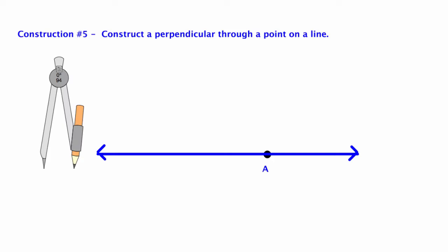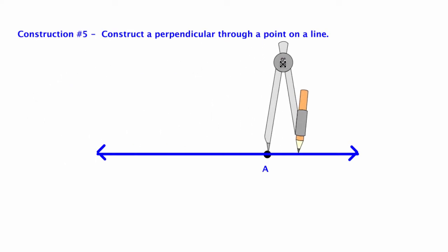For this construction, I'm going to construct a perpendicular through a point on a line. So I'm given a line with a point A marked on it.